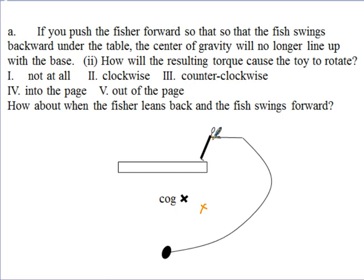And, if you were to rock the fisherman back and he was over here, then the fish would be over here, the fisherman would be leaning back, and the center of gravity would be here. And, again, you get a couple which brings it back into equilibrium. So, you have this stability.